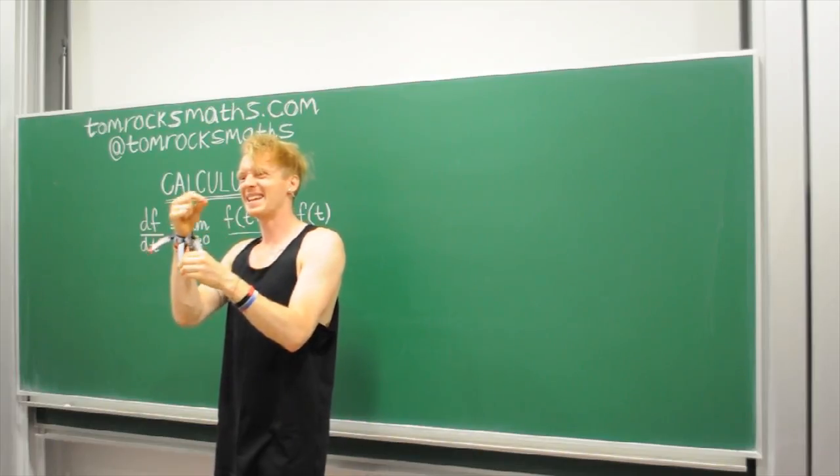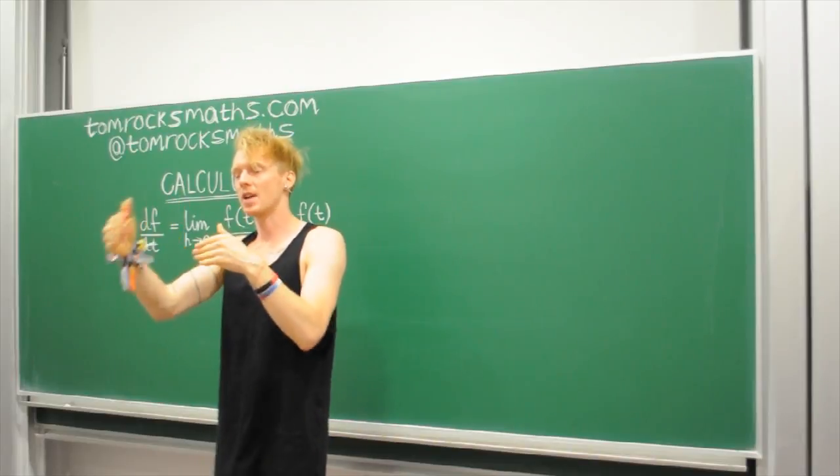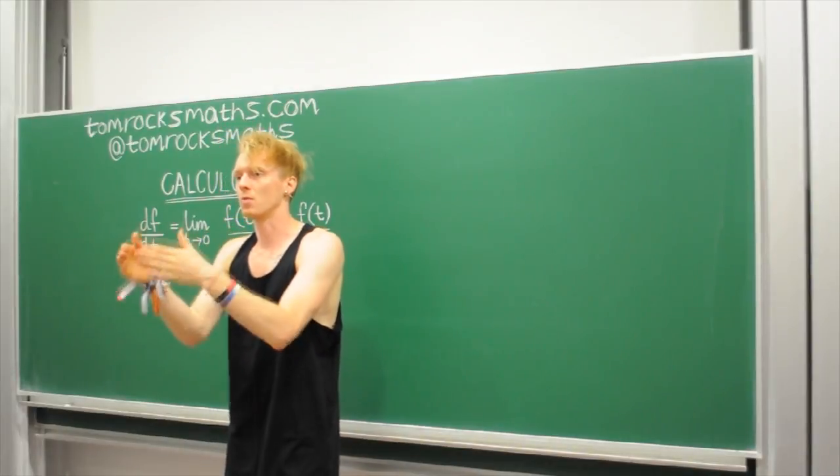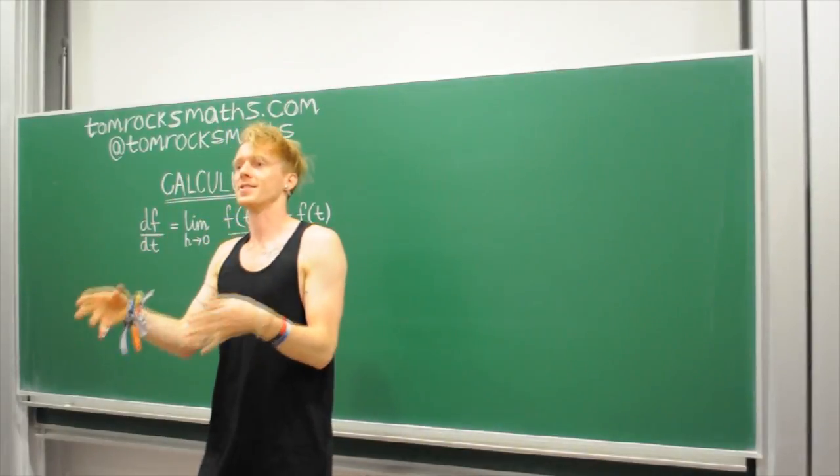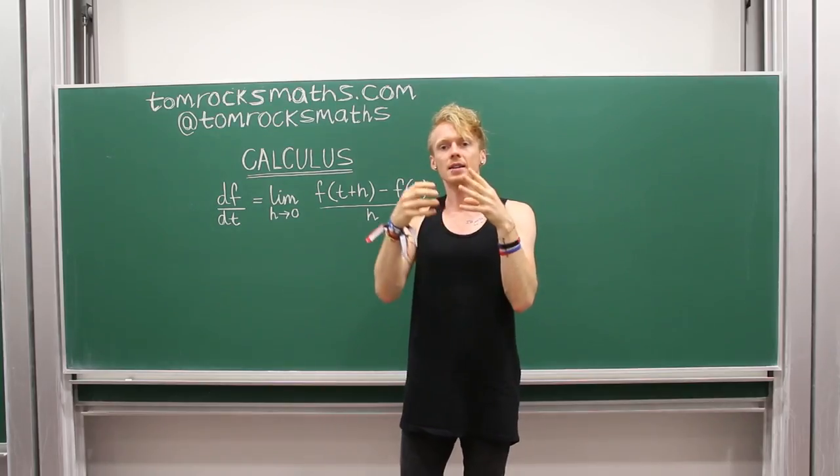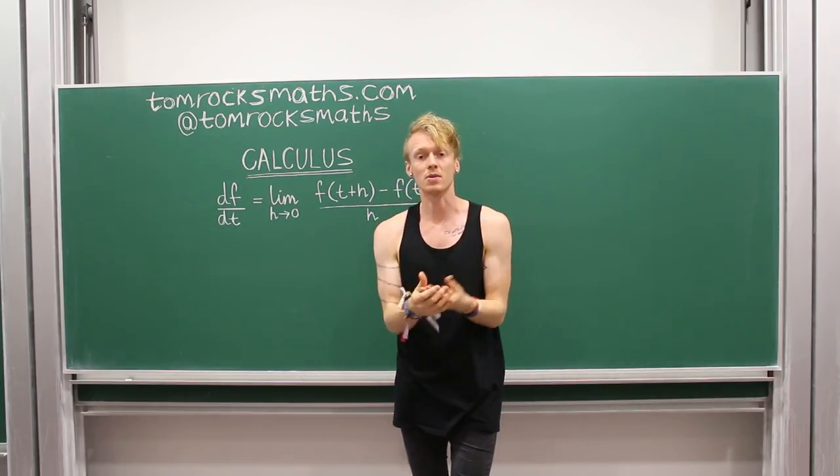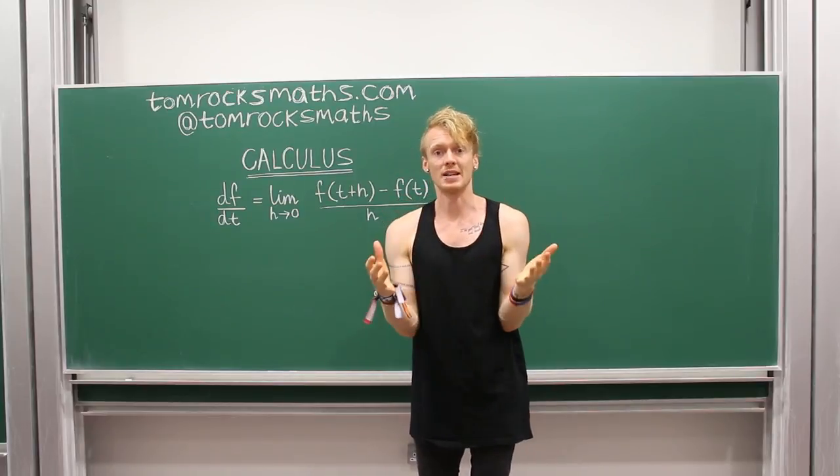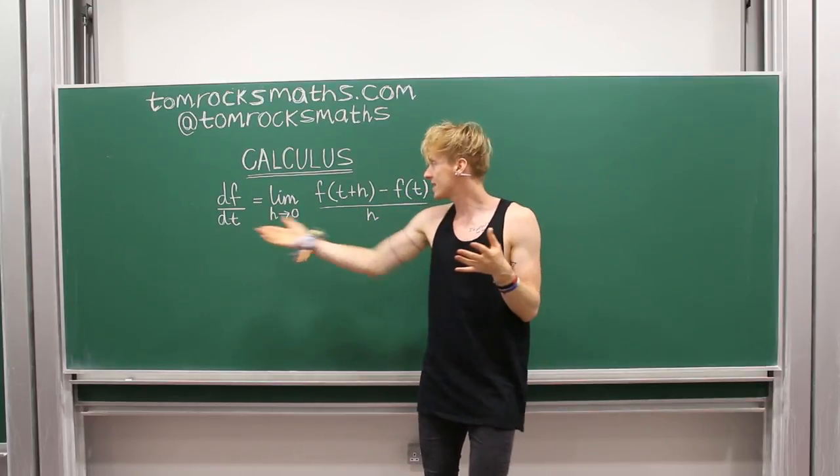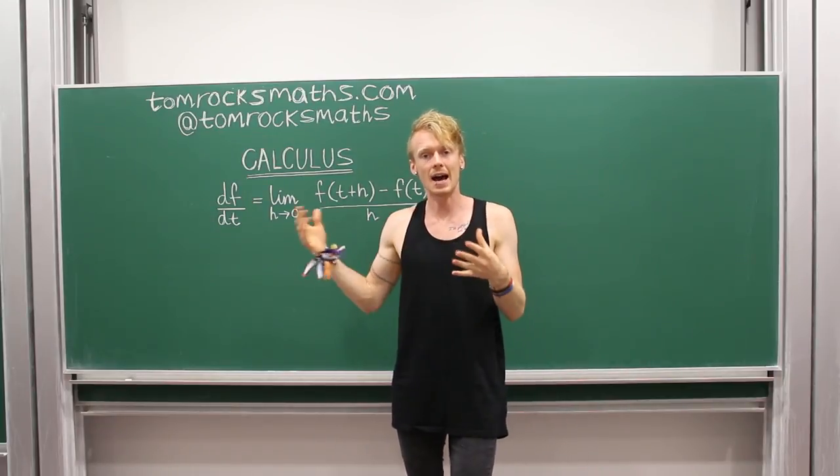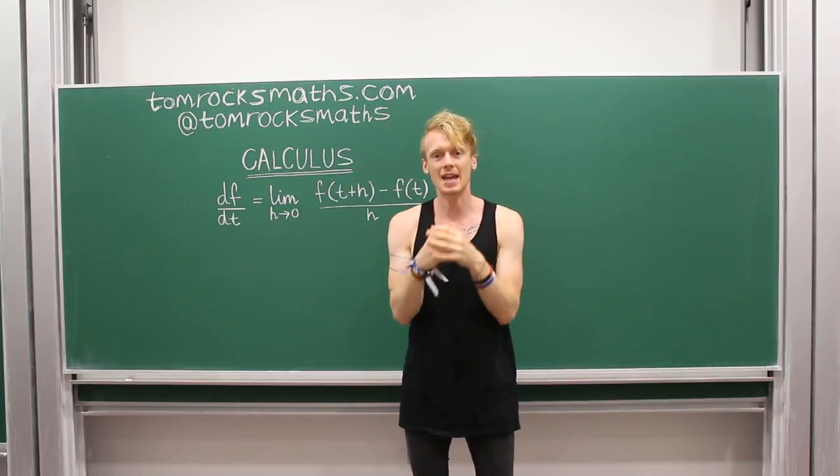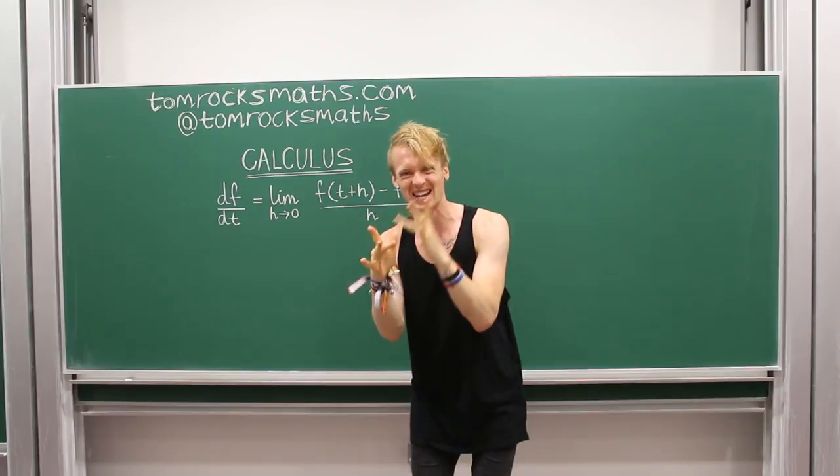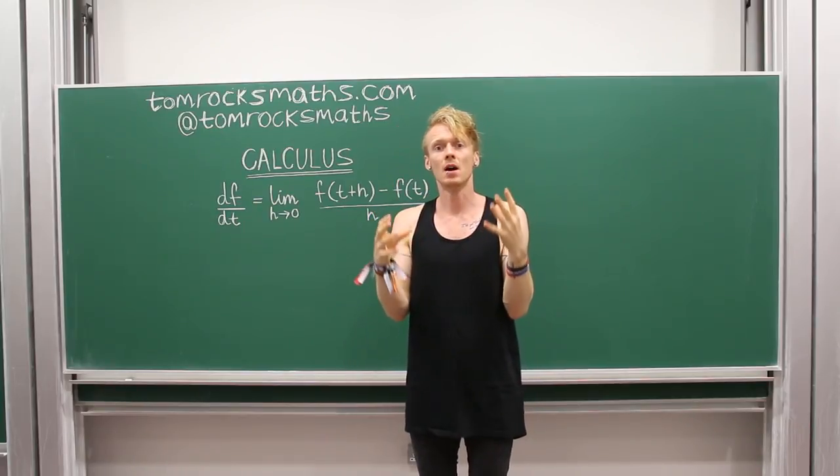But you're never quite exactly at that instant in time. You get closer and closer by making smaller and smaller time interval measurements. To actually get an instantaneous measurement, you have to follow a very well-defined mathematical procedure. And this equation is that blueprint, that instruction manual, and tells you how to get that instantaneous measurement. So you can work out the speed at exactly one point, at one exact point in time.